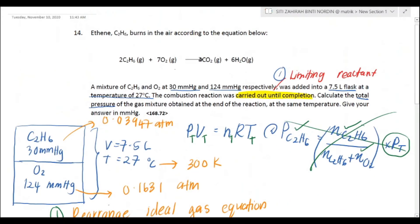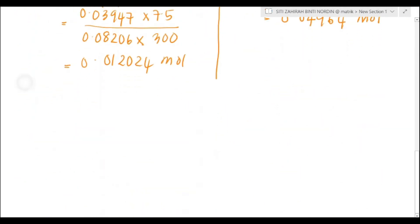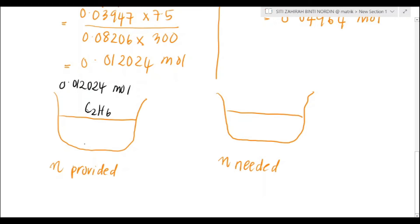Remember that we need to find which one is the limiting reactant. Now draw your beaker or your ratio, depending on what method that you want to use to find the limiting reactant. I'm used to using my beaker because I found it to be easy to have my information in one place. My mol provided: 0.012024 mol for C2H6, while the mol for oxygen is 0.04964 mol.